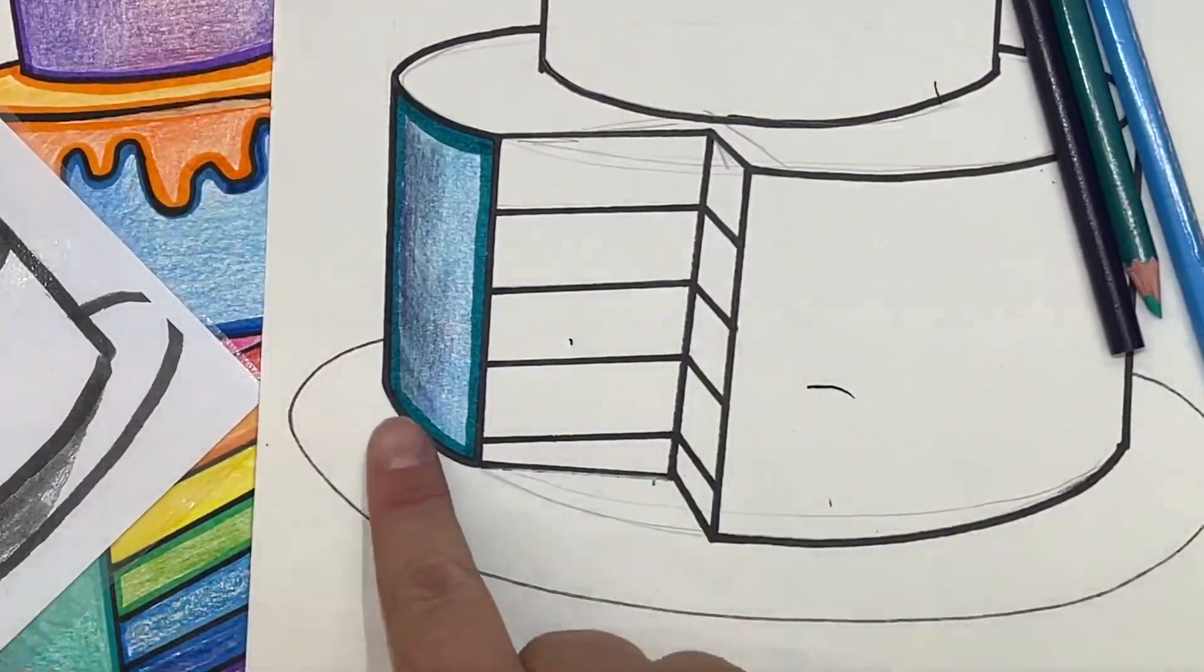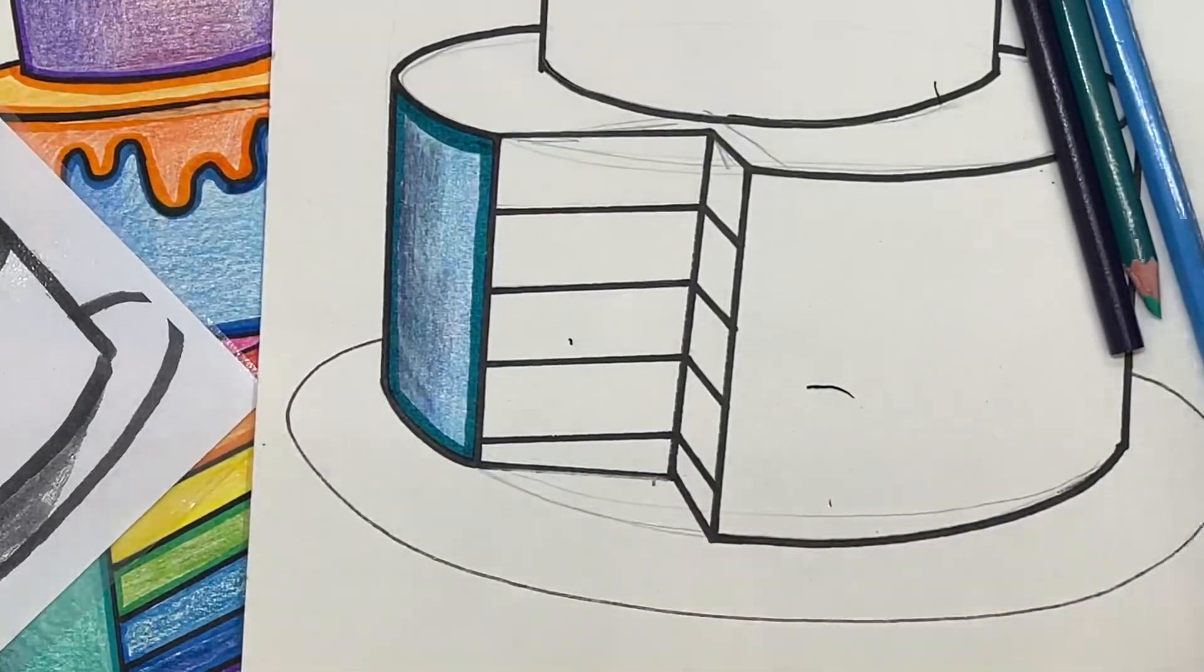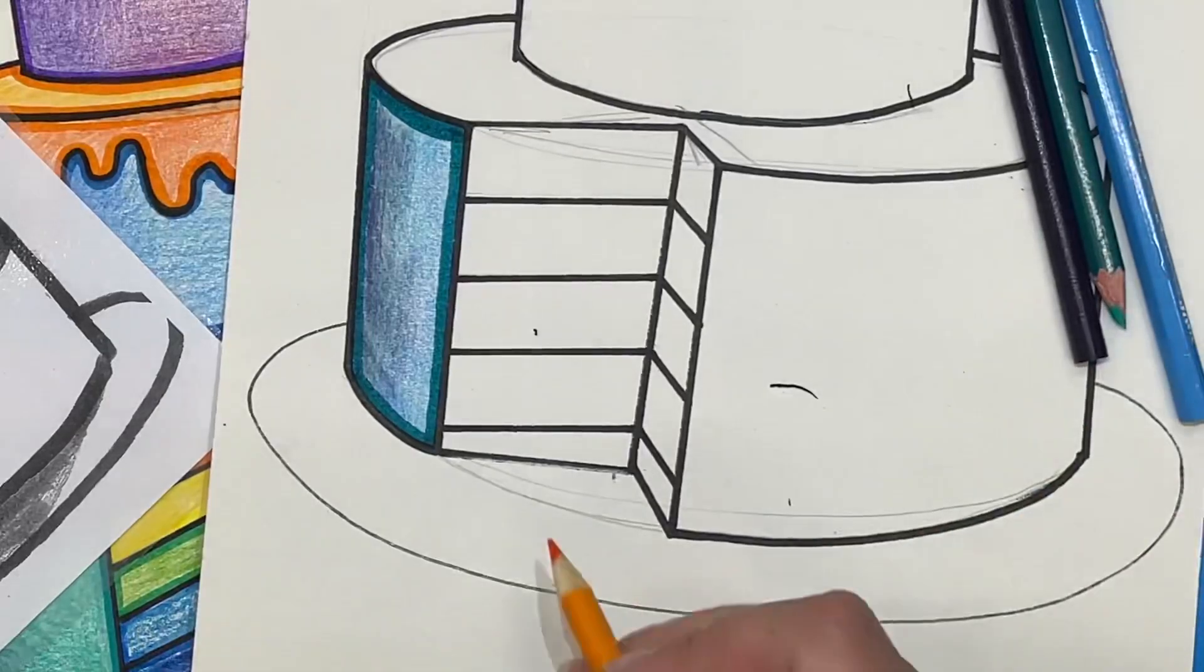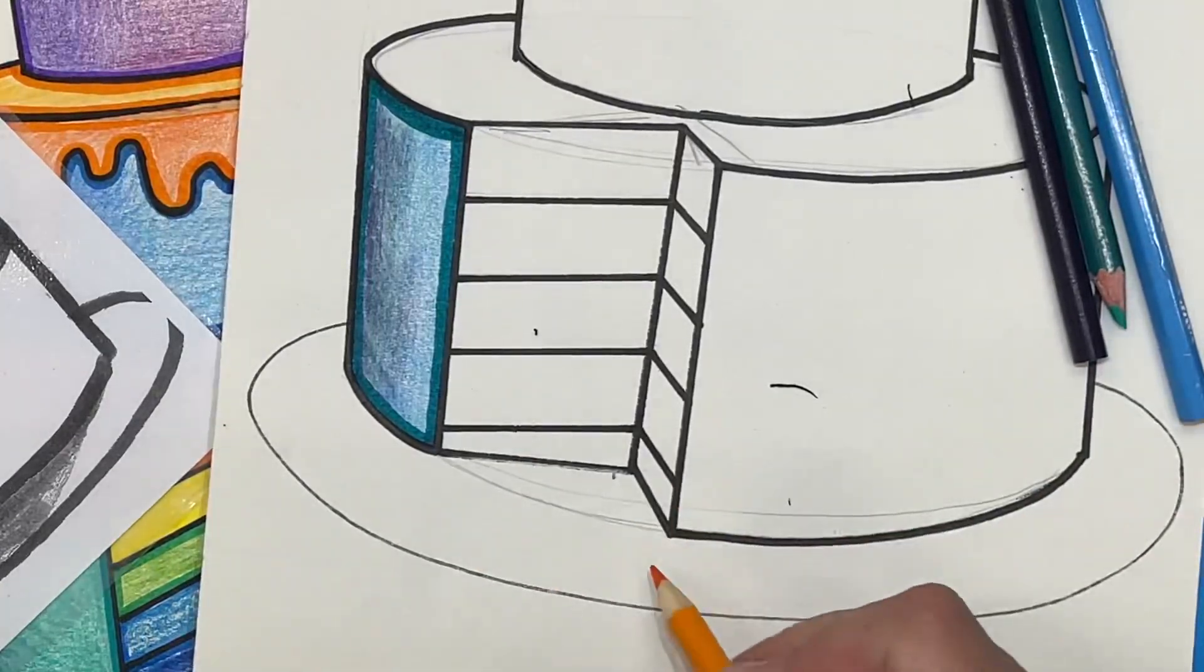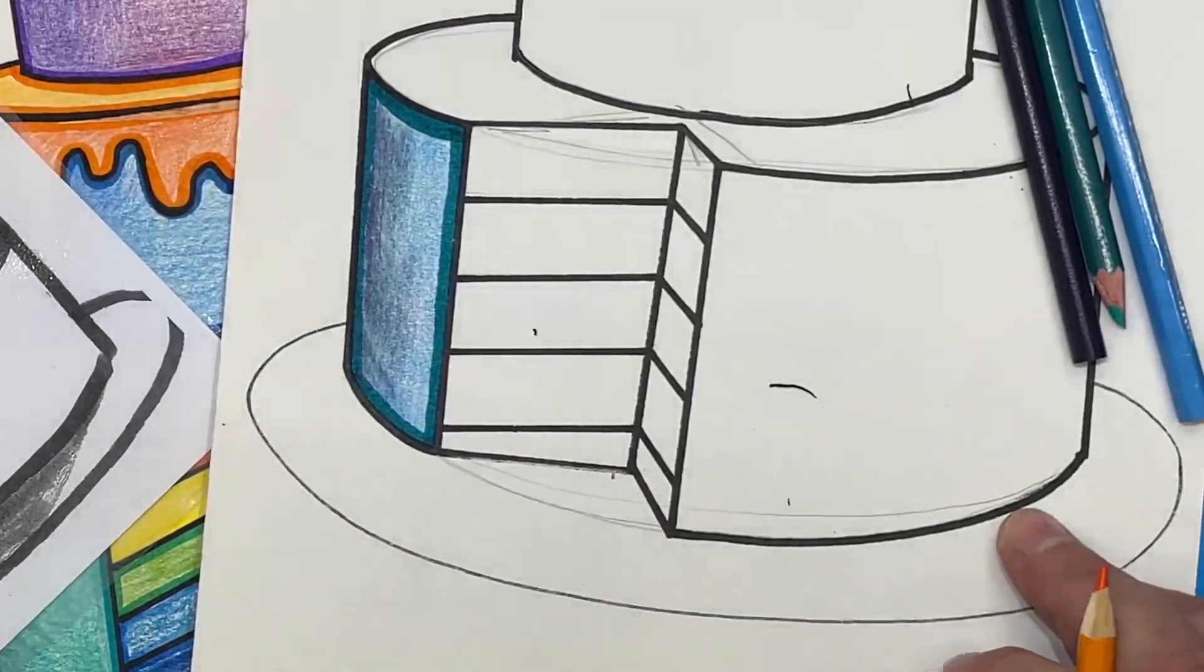This is especially true down here below our cake on our plate. Use your colored pencils to lightly color in a shadow and have that cake look like it is sitting on our plate.